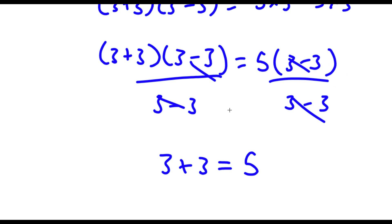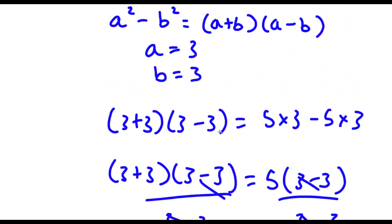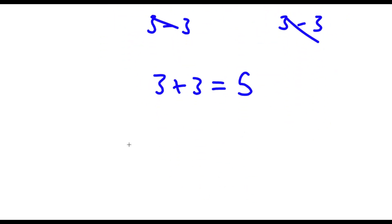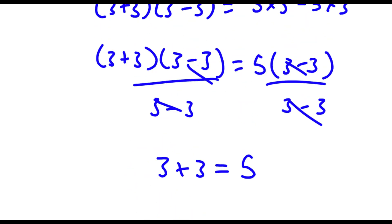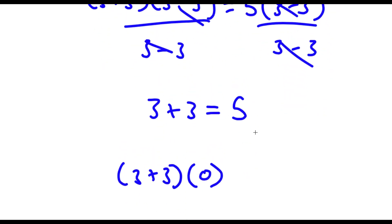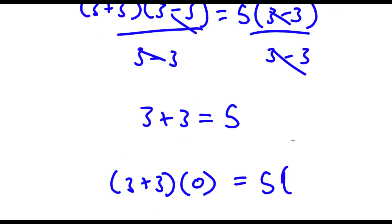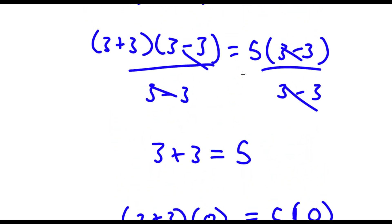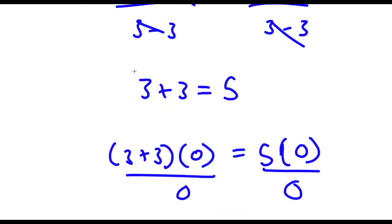So if you're wondering how this is actually wrong — it's because of this step over here. I divided both sides by (3 minus 3). Well, what is 3 minus 3? 3 minus 3 is simply equal to 0. So if I divide both sides by 0, 0 divided by 0 is not equal to 1 — that's undefined. So you can't actually cancel these out, because dividing by zero is undefined. That's where this equation is actually wrong, and 3 plus 3 does not equal 5.